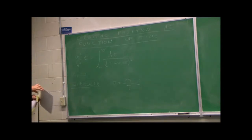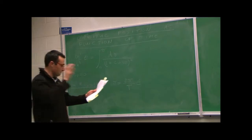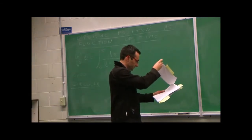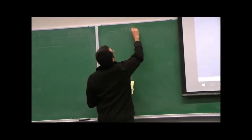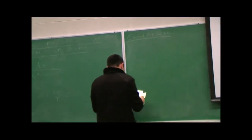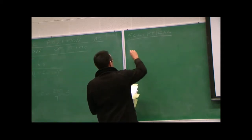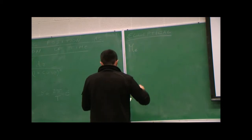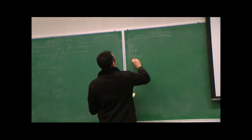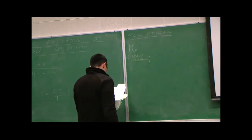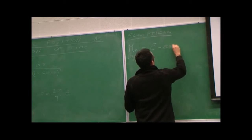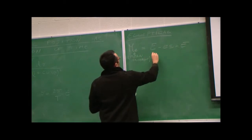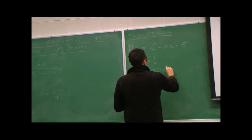For elliptical, I'll give you the result right away that connects theta and t. The mean anomaly M_e is equal to capital E minus eccentricity times sine of capital E. So this is the mean anomaly, and this is called the eccentric anomaly, and we'll have to define this.